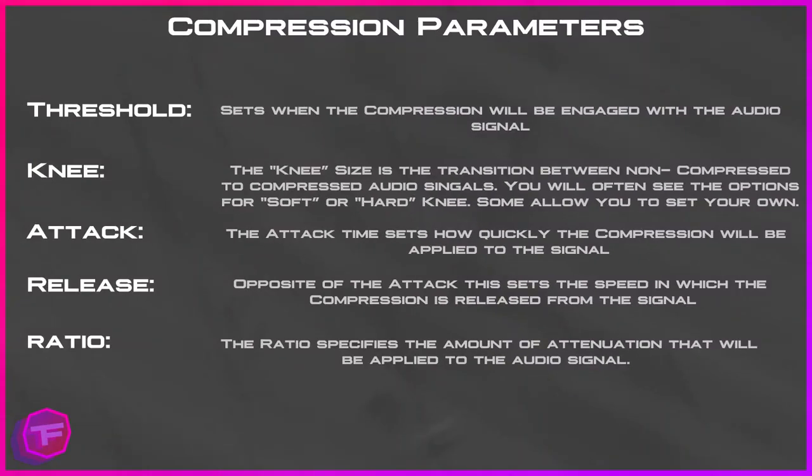There are some parameters that operate a compression filter: the threshold, the knee size, the attack time, the release time, and the ratio. The threshold sets when the compression will be engaged — at which decibel level. The knee size is the transition between non-compressed and compressed audio signal. The attack time is how quickly compression is applied, while the release time sets the speed at which compression is released. The ratio specifies the amount of attenuation applied.